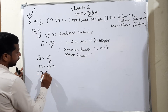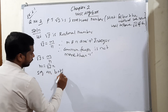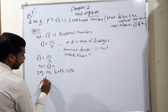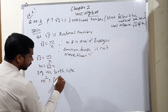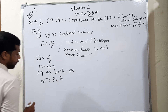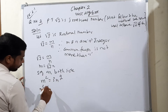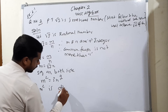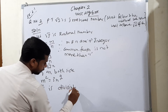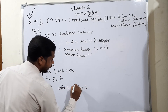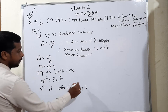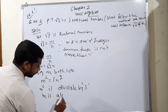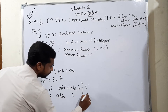Squaring on both sides: m squared equals 3 n squared. So, m squared is divisible by 3. Therefore, m is also divisible by 3.